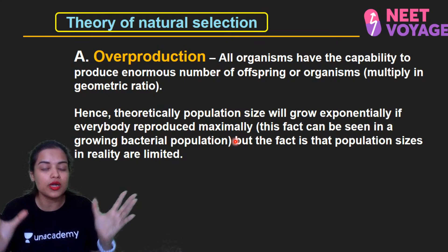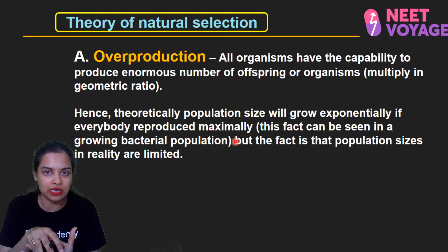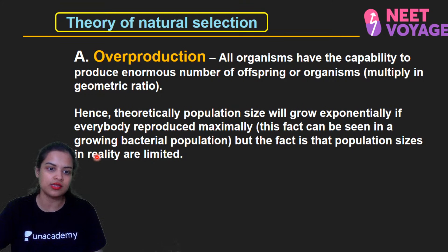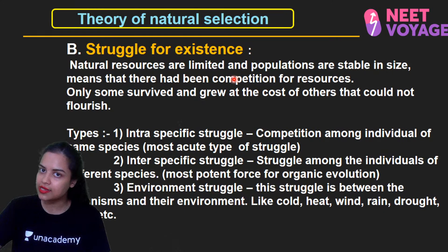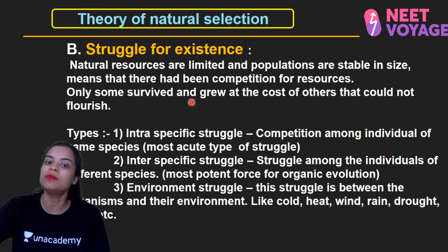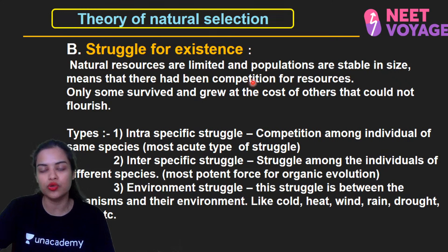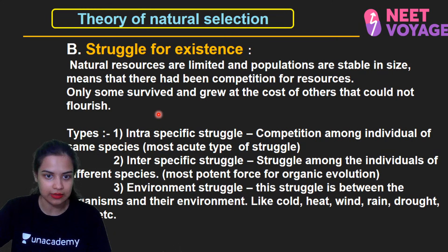Population sizes in reality are limited because natural resources are limited, so there is a struggle for existence. Only some survived and grew at the cost of others that could not flourish. The struggle happens across all varieties — the fittest, whose characteristic features are better adapted to the environment, will survive. There are three different types of struggle: number one is intra-specific struggle — competition within the same species — and this is the most acute type of struggle.